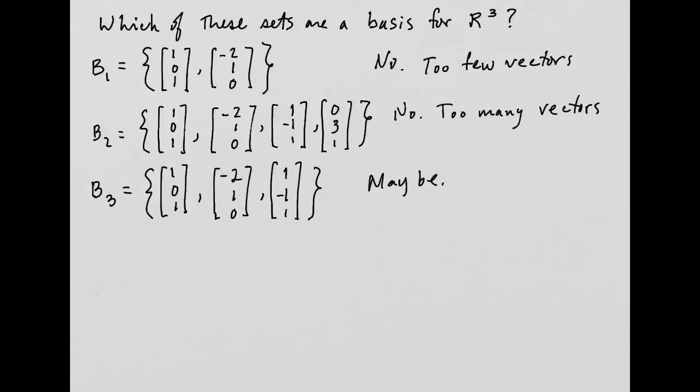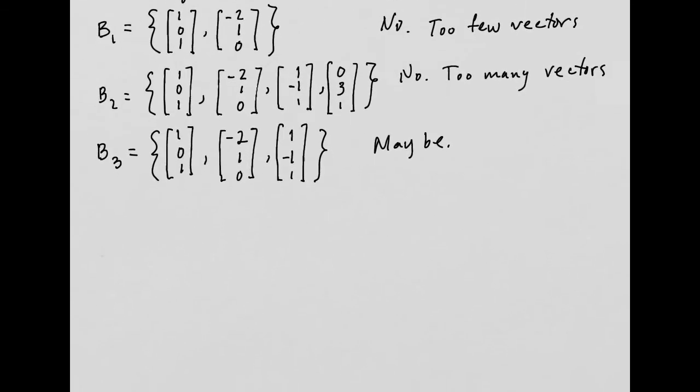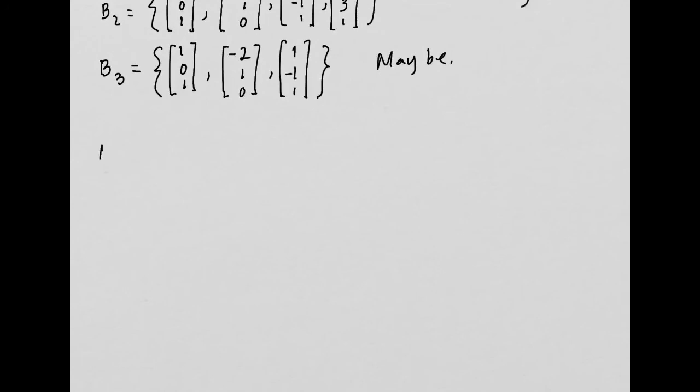Well, in R³, or Rⁿ for that matter, this is a pretty easy thing to check using the invertible matrix theorem. So what we're going to do is let the matrix A be the matrix whose columns are the vectors in this set B3.